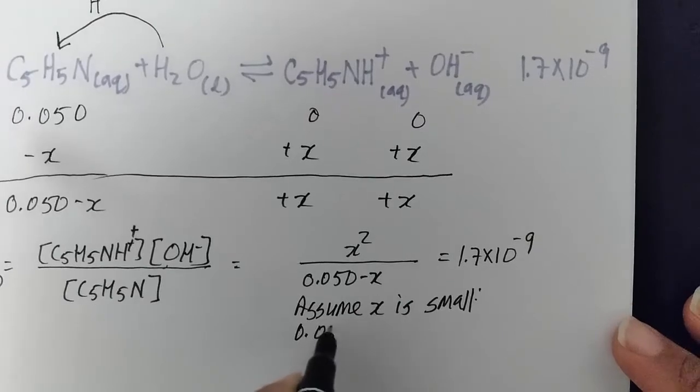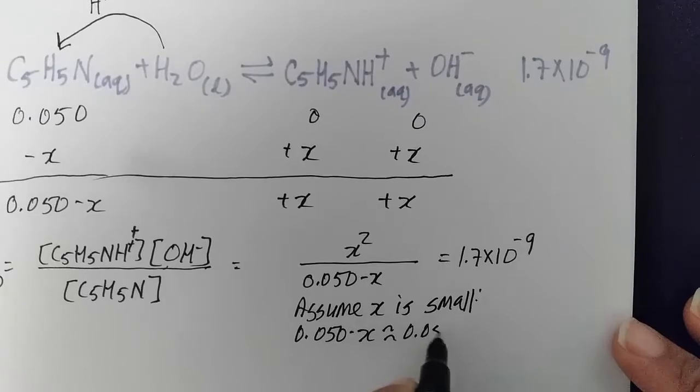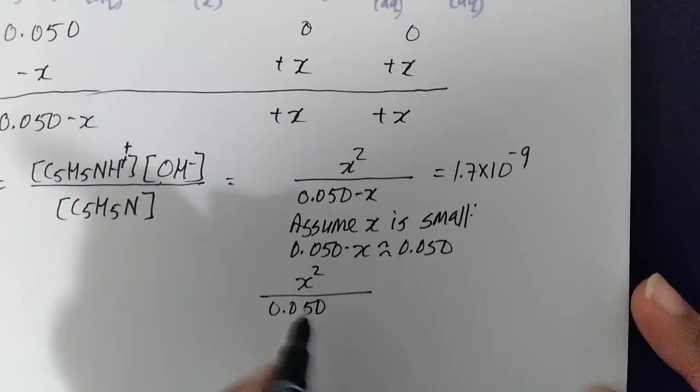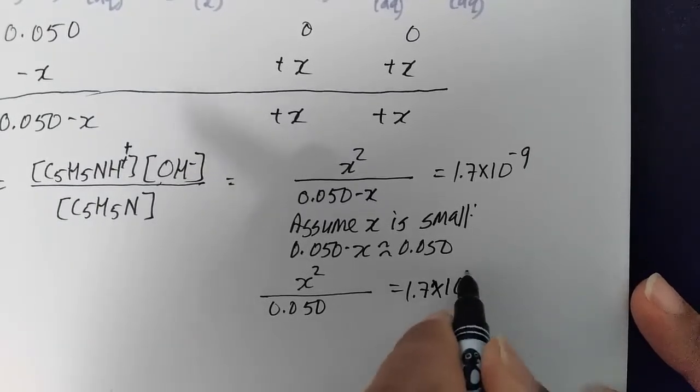So when I assume X is small, 0.050 minus X is about 0.050. So X squared divided by 0.050 equals 1.7 times 10 to the minus 9.